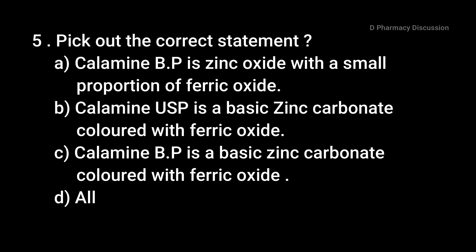Question 5: Pick out the correct statement. Option A: calamin BP is zinc oxide with a small proportion of ferric oxide. Option B: calamin USP is a basic zinc carbonate colored with ferric oxide. Option C: calamin BP is a basic zinc carbonate colored with ferric oxide. Option D: all. Correct answer is option C.